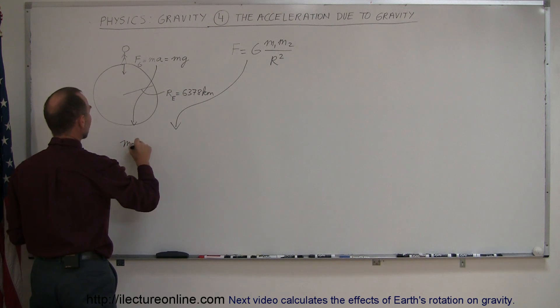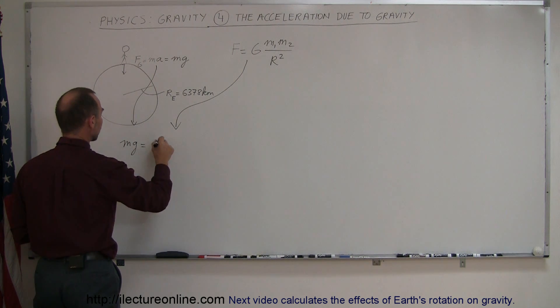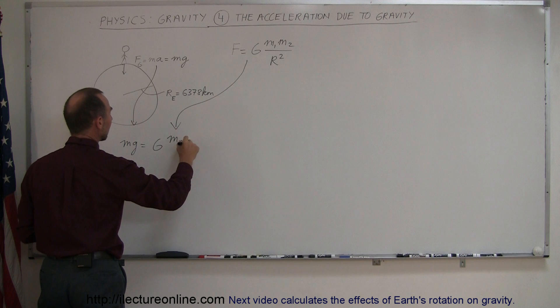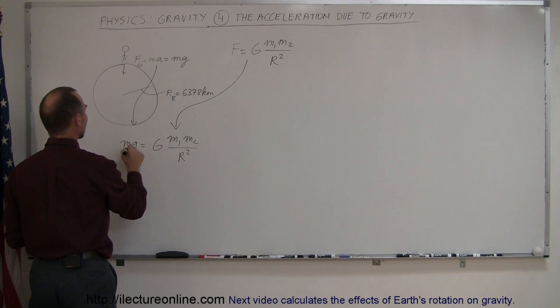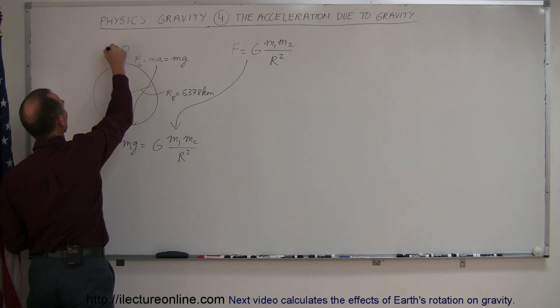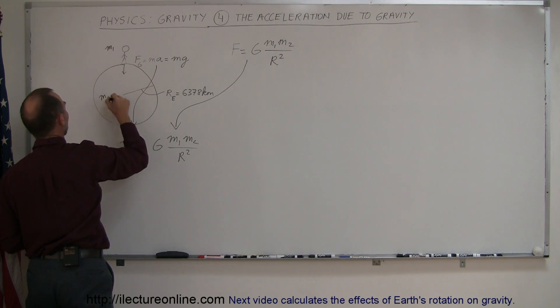So we then have mg is equal to G times m1 m2 divided by the distance between them squared. Now this here will be m1, let's call this the mass of the person m1, let's call the mass of the earth m2.